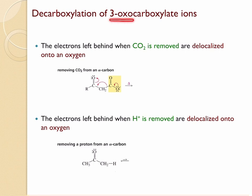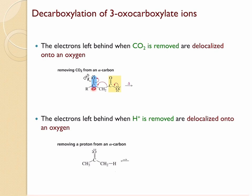Decarboxylation can happen in 3-oxo carboxylate ions. What is a 3-oxo carboxylate ion? Here we have an example: if you assign carbon number one, two, and three, at the third position you have an oxo group. Why is this called an oxo group? We know this is a keto group, but since the carboxylate has higher priority, the keto group must be used as a prefix. The prefix for the keto group is 'oxo', so that is why we call this a 3-oxo carboxylate ion.